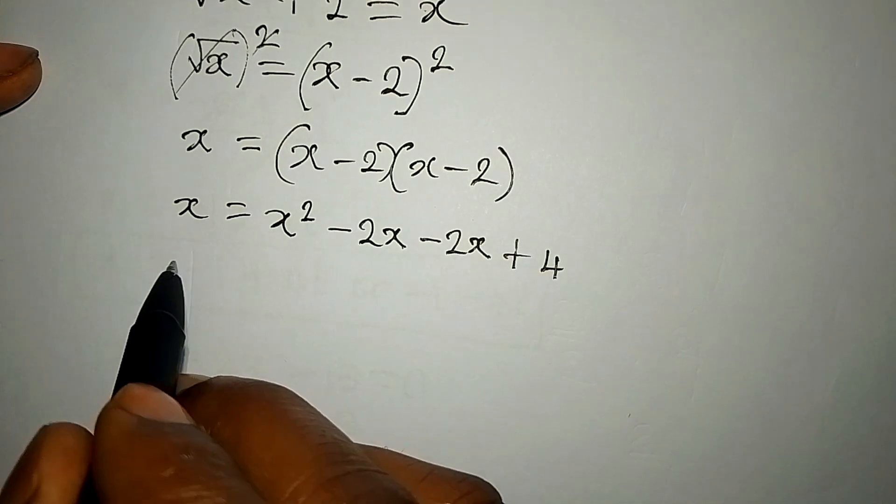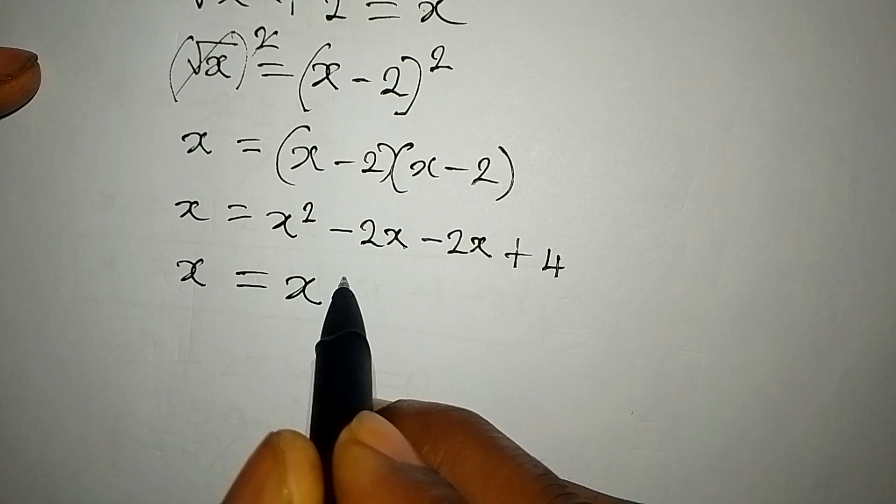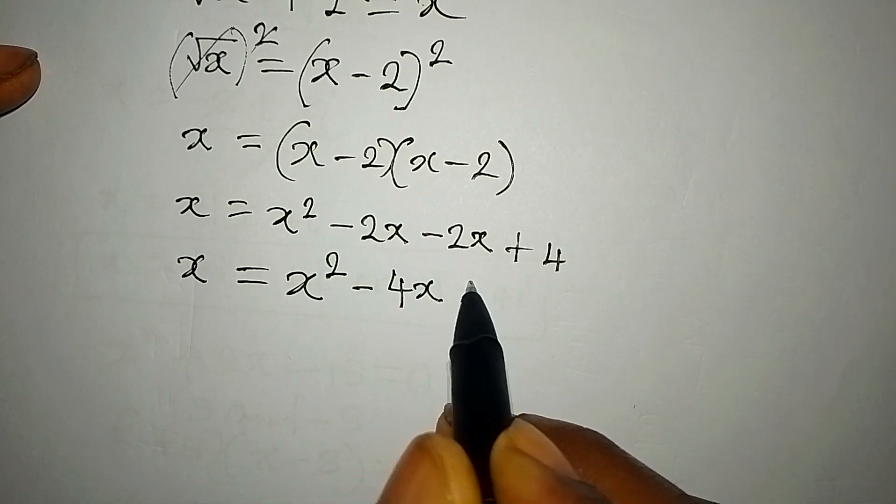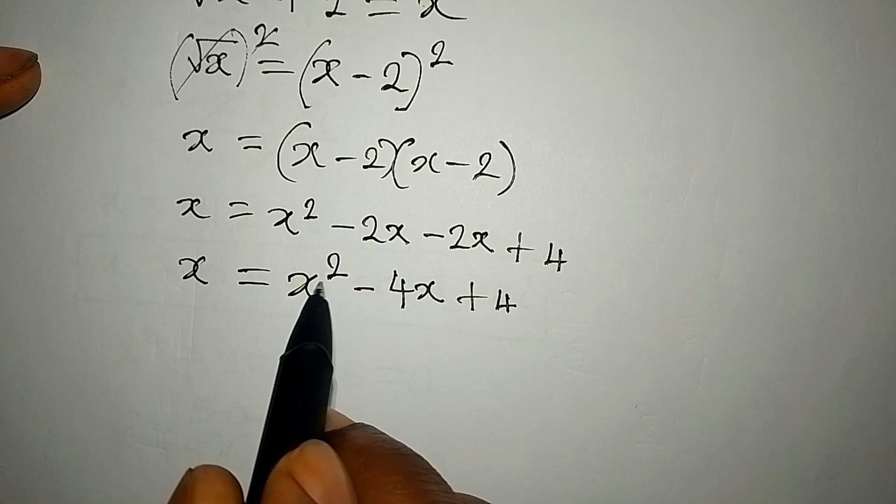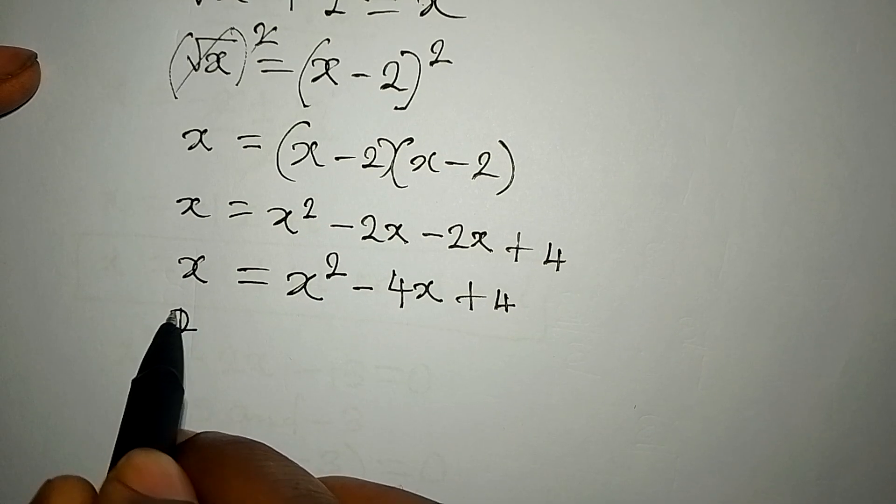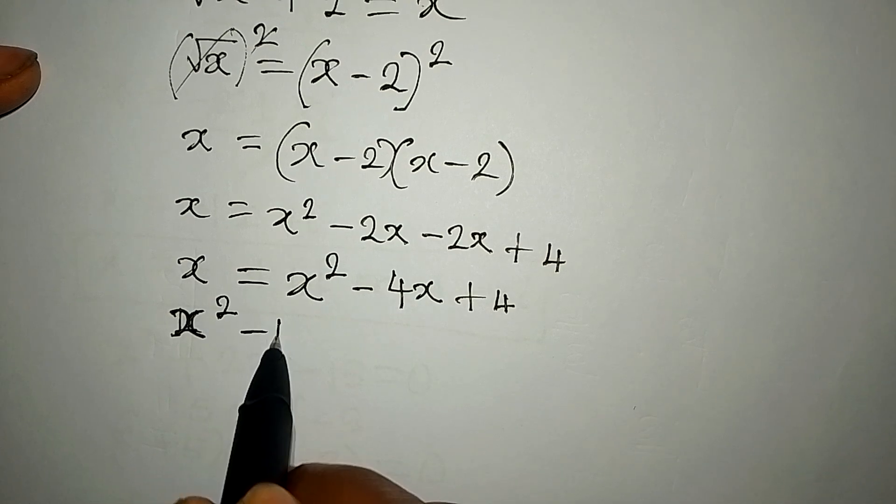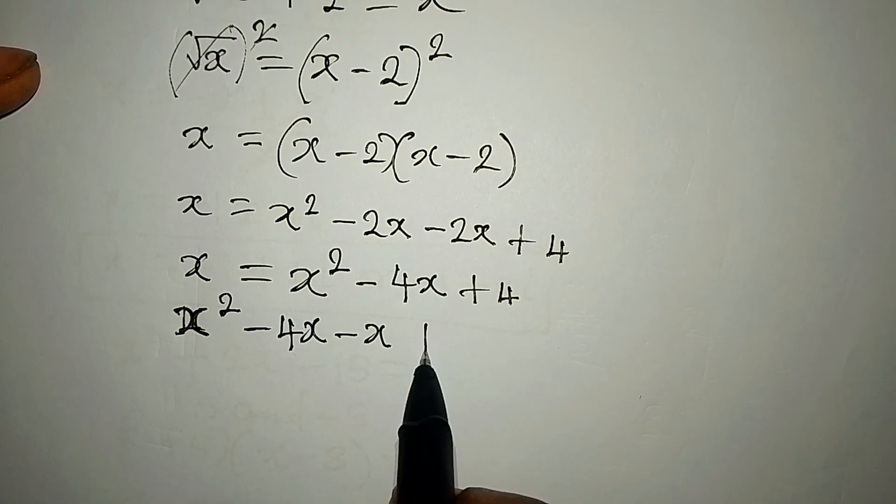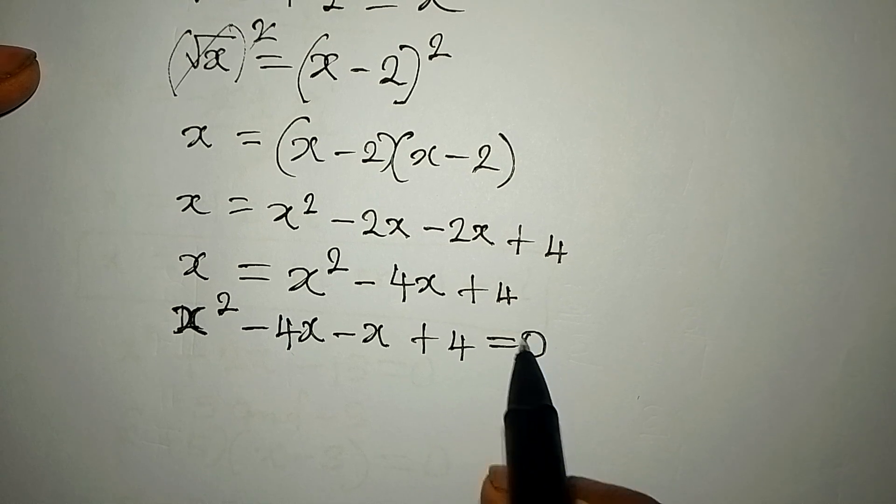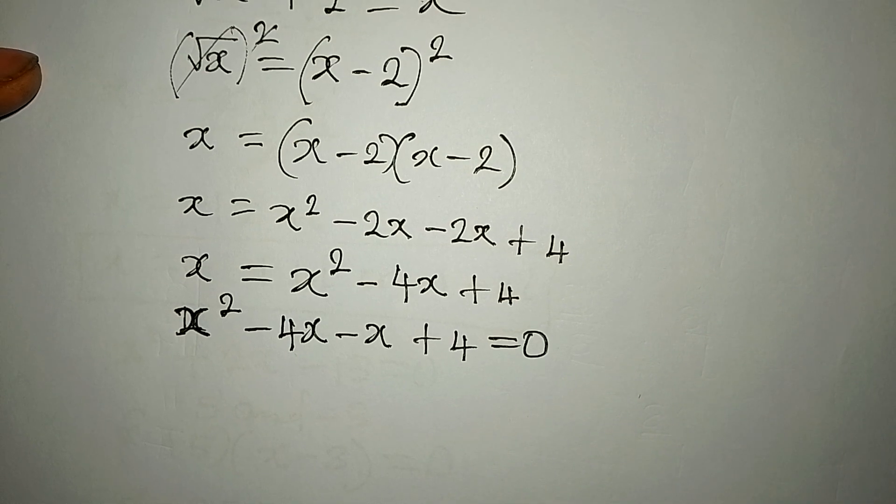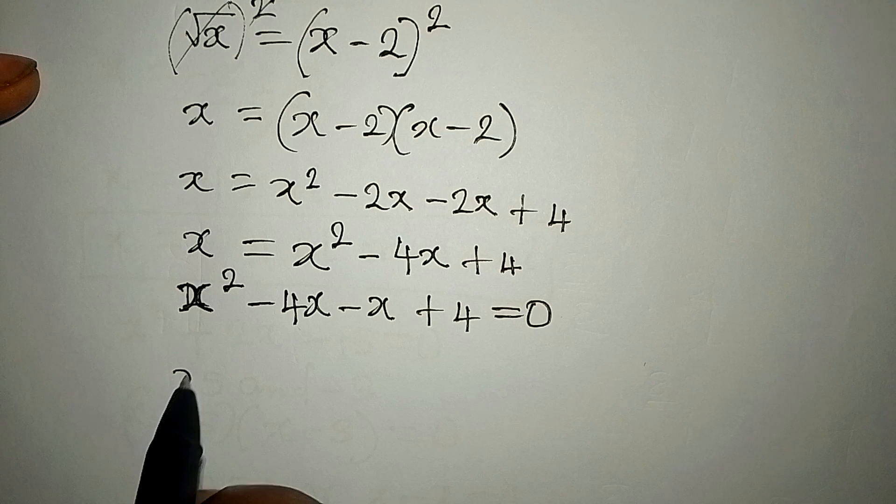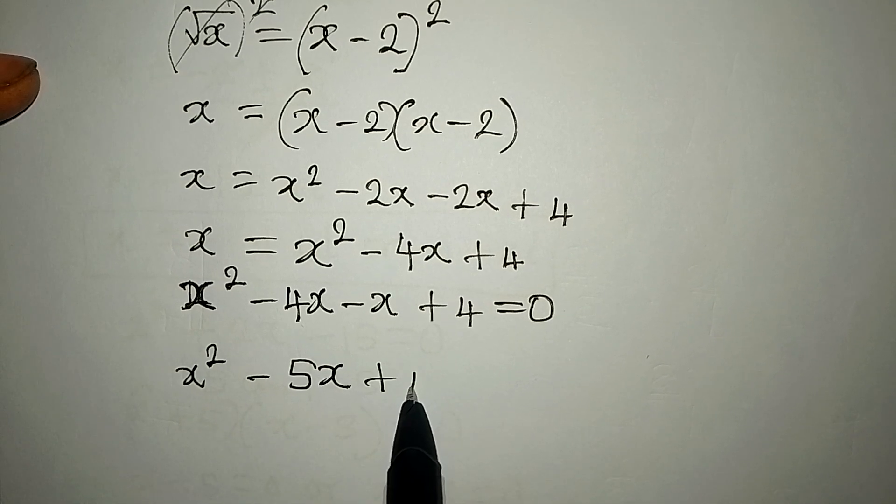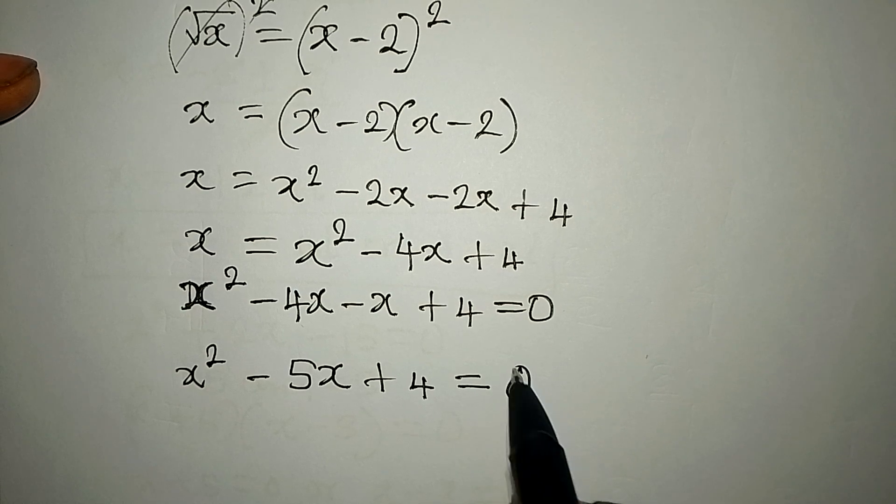So we have x to be equal to x squared minus 4x plus 4. Now let's write this first. We write x squared, then minus 4x. This becomes negative x. Then we have plus 4 to be equal to 0. We have x squared minus 5x plus 4 equals 0.